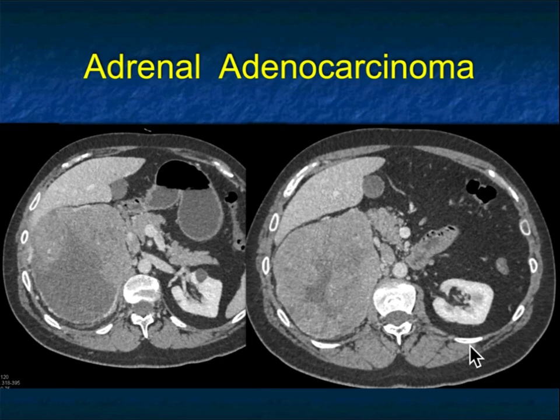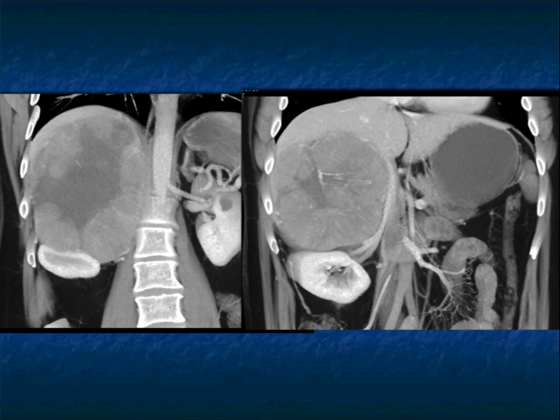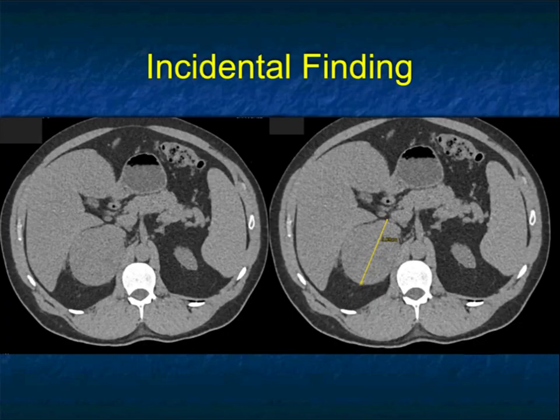Another example on the contralateral side — a large right adrenal mass that's enhancing but with areas of necrosis. It's large with some adenopathy present: primary adrenal cortical carcinoma. Here it is in 3D showing the central necrosis and some vascularity.